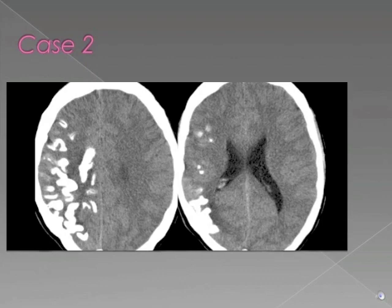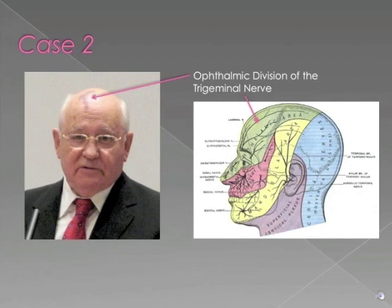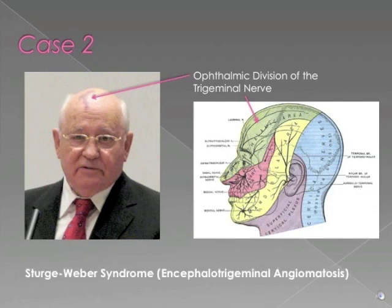Moving on to Case 2, here we have two axial CT images demonstrating gyroform calcifications in the right hemisphere. The patient in Case 2 may bear some resemblance to Mikhail Gorbachev. You'll note the port wine stain on Mikhail Gorbachev's forehead, specifically in the ophthalmic division of the trigeminal nerve, which is a characteristic cutaneous feature in persons with this disease — Sturge-Weber syndrome, also known as encephalotrigeminal angiomatosis. The gyroform calcifications occur on the same side as the port wine stain and occur within areas of pial angiomatosis.